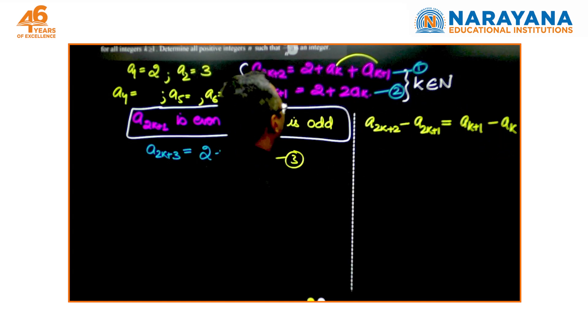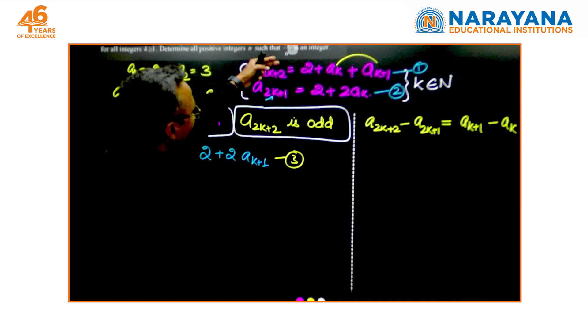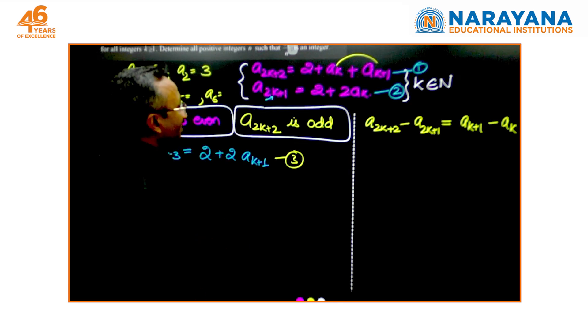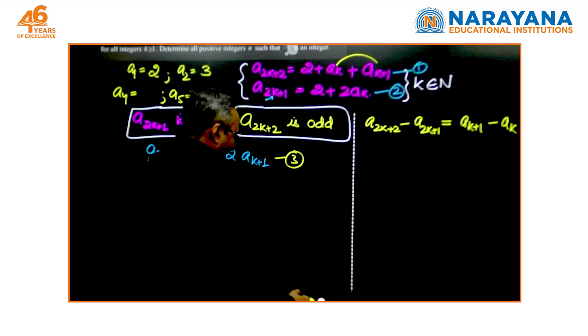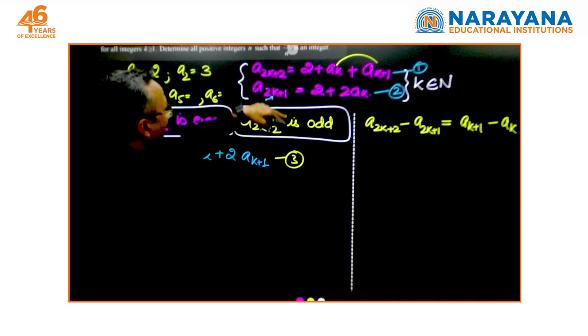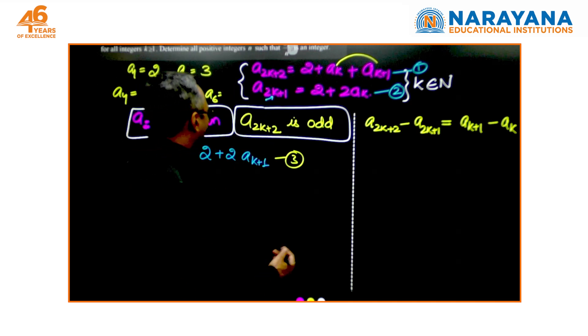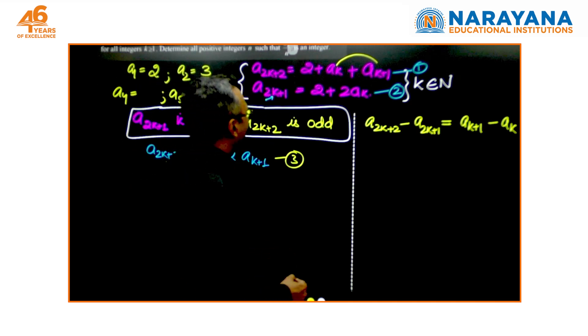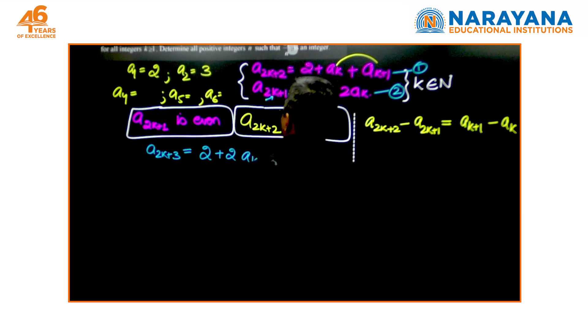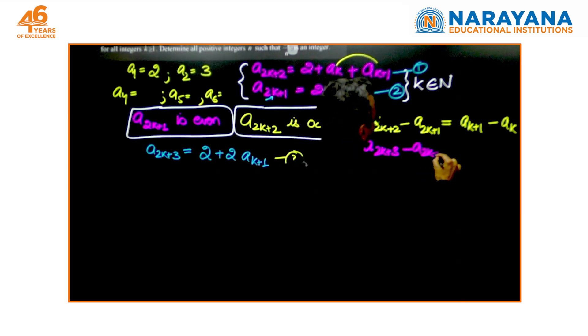Let us see if we have gone the right way, yes a2k+2, 2 gets cancelled with 2 minus ak. At the same time, subtract 1 from 3 or maybe 3 from 1, you can get another result. If I subtract this way, I get a2k+3 minus a2k+2, do you understand?